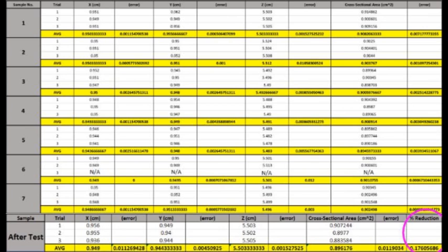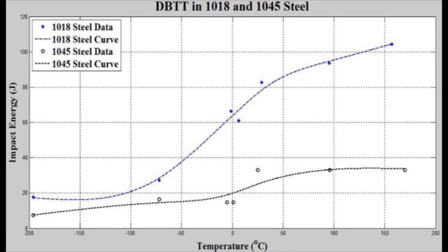In the next slide, the results of the impact energy expended to fracture the sample as a function of sample temperature are presented. This is a plot done in MATLAB. Tuesday's group did the 1018 steel and Thursday's group did the 1045. Comparing the two, you can see that the 1018 steel has a higher DBTT compared to the 1045. This shows how much the carbon composition affects the DBTT curve.